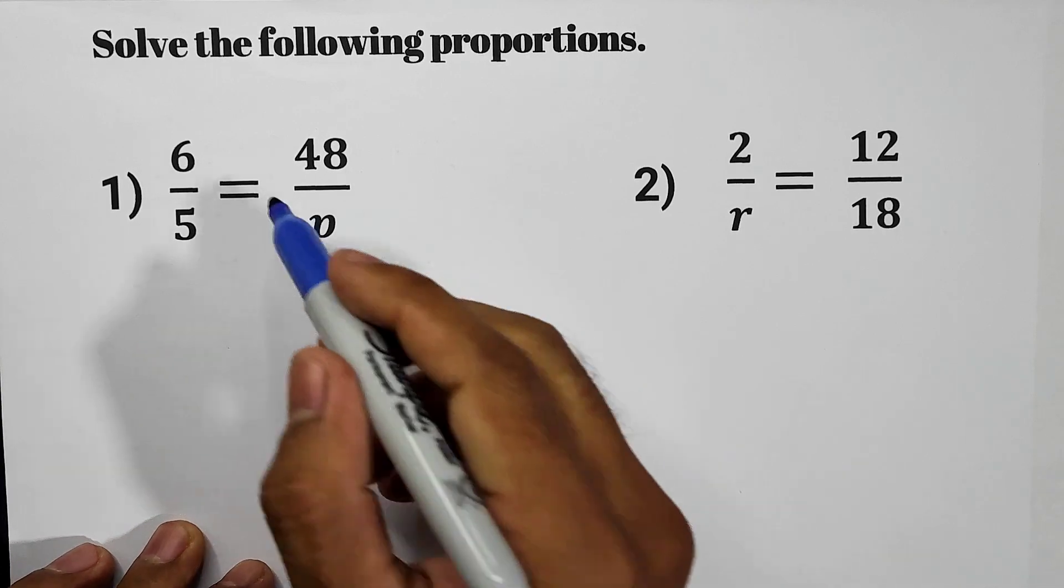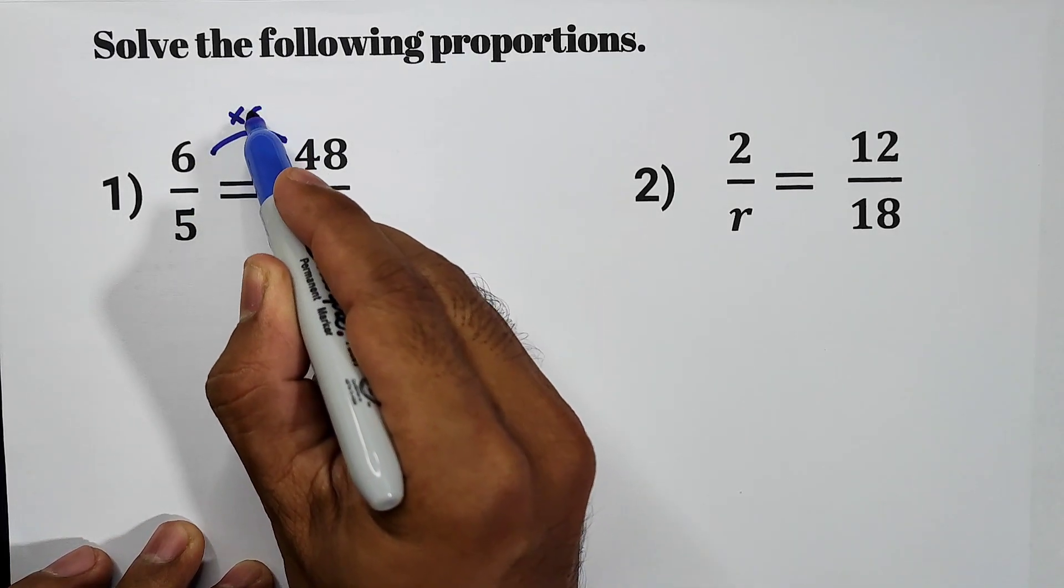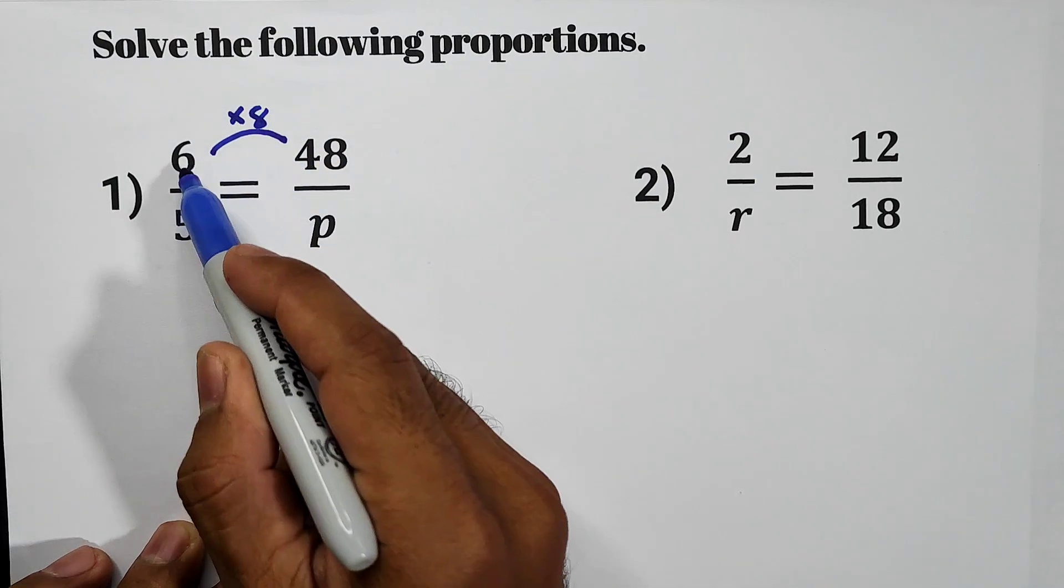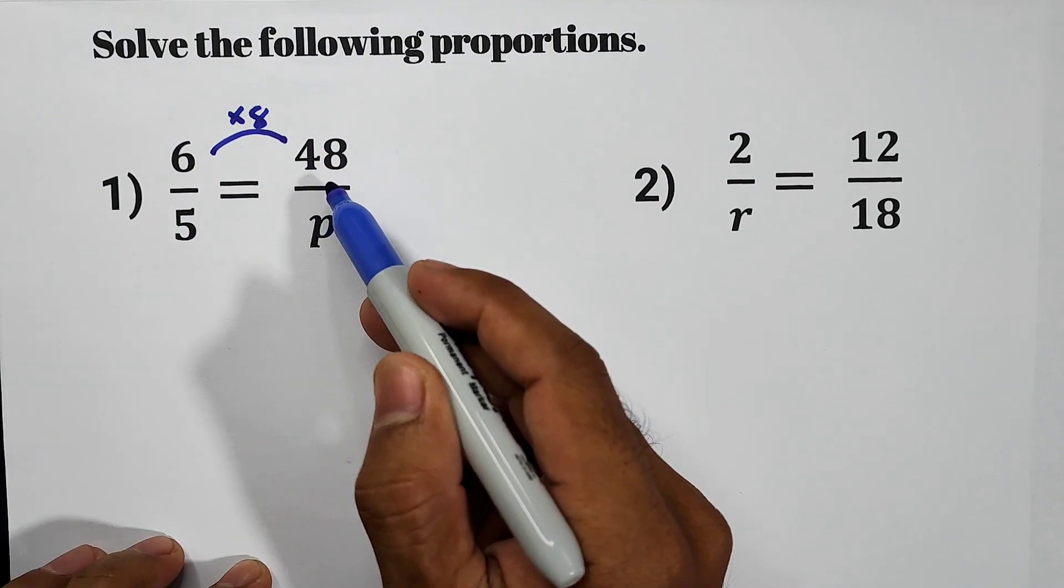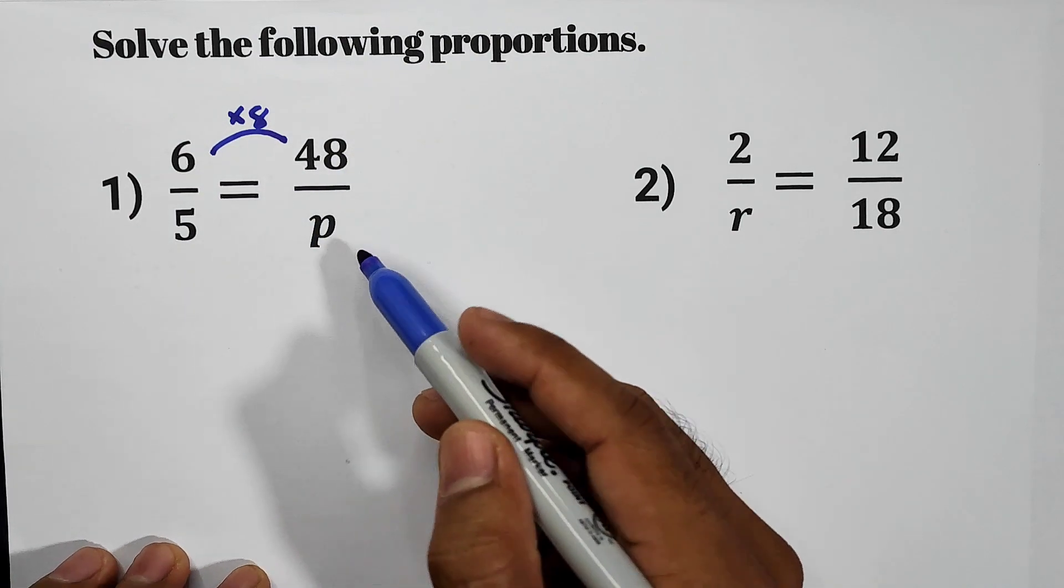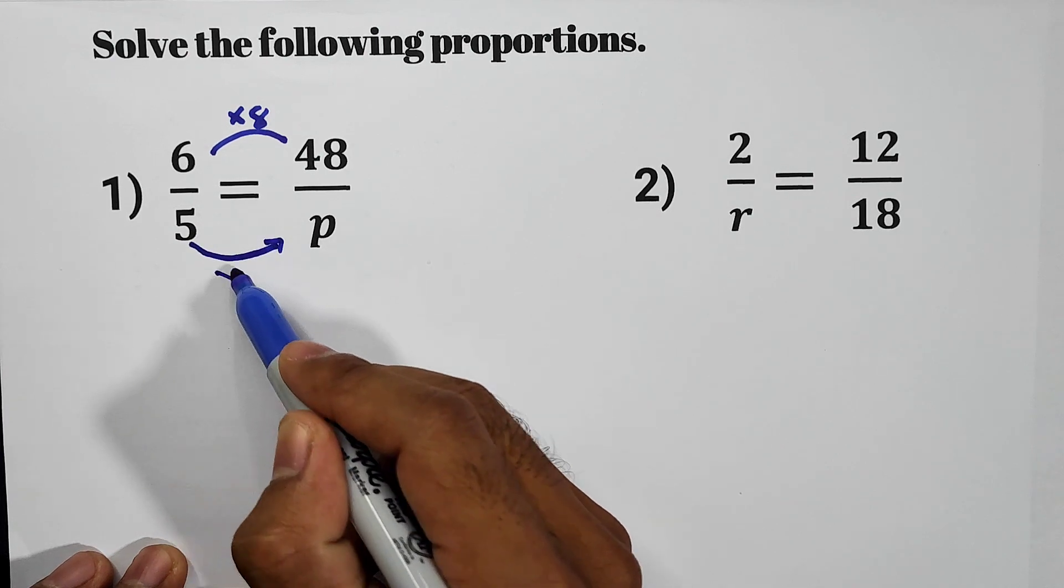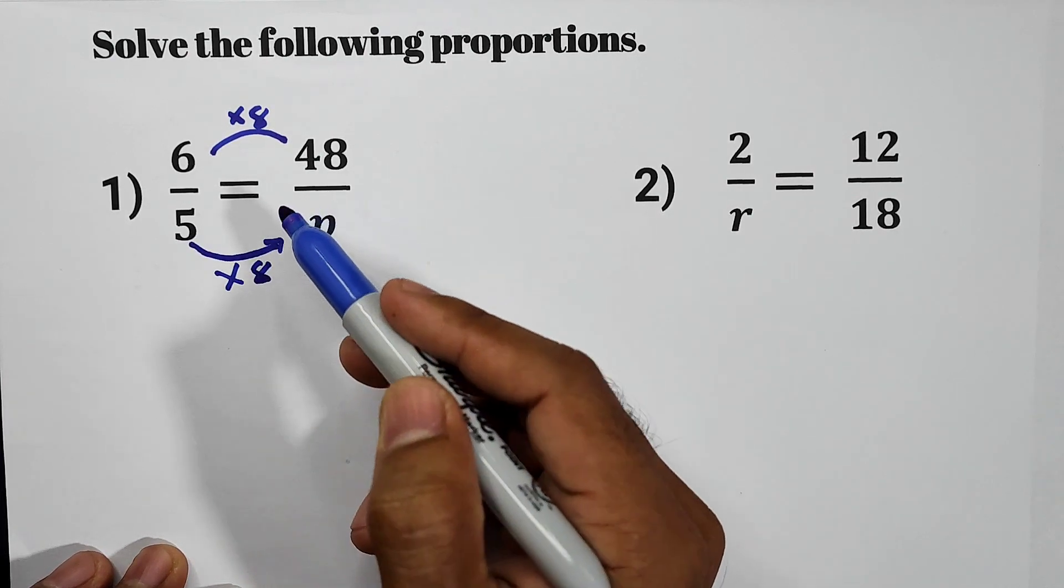As you can see, we multiply 6 by 8. That's why 6 becomes 48. What you do in the numerator, you will do on the denominator. That's why 5, you can multiply it also by 8.